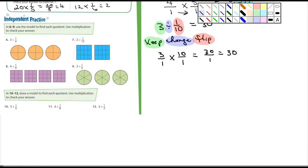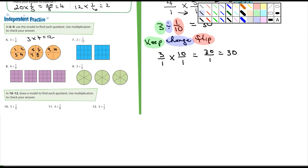In numbers six through nine, use the model to find each quotient and use multiplication to check your answers. Number six: three divided by one-fourth is the same as three times four, which equals twelve. Looking at the model: one, two, three, four, five, six, seven, eight, nine, ten, eleven, twelve. Number seven: two divided by one-twelfth — what's two times twelve? Twenty-four. You should be able to do eight and nine the same way.